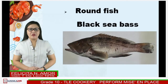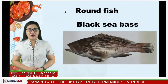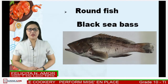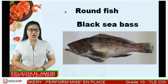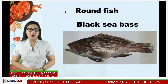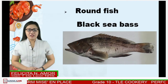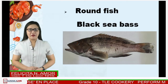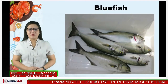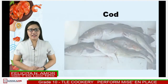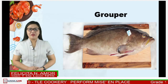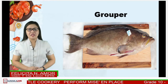Another kind of saltwater fish is round fish. They are round in shape with eyes on either side. Examples are black sea bass — take note, that is sea bass; there's a typo error in our learning module. Another example is bluefish, next is cod, and the last example of round fish is the grouper.